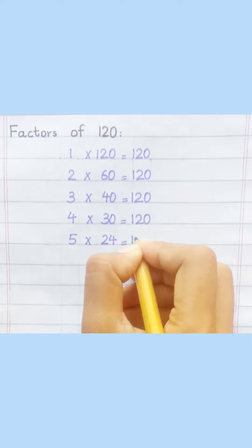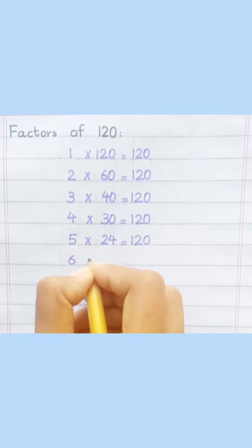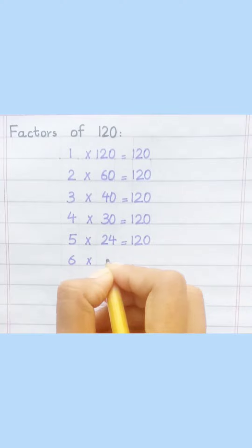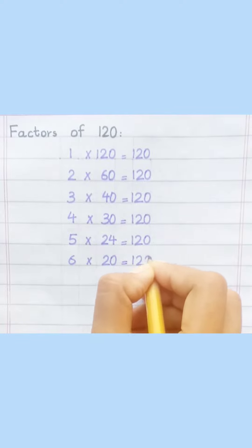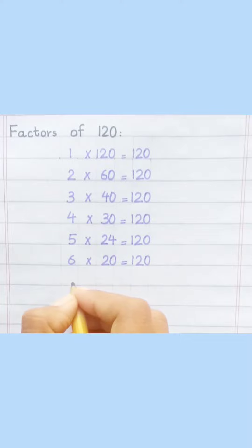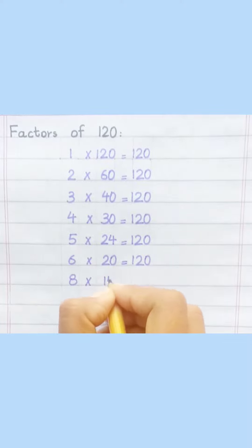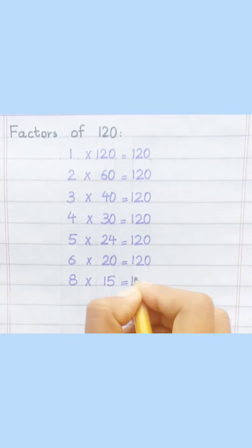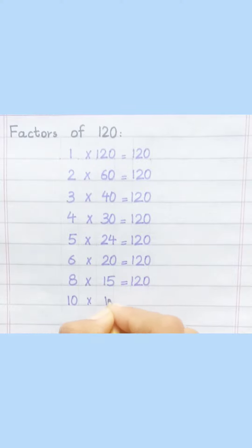Five 24s are 120. Six 20s are 120. Eight 15s are 120.